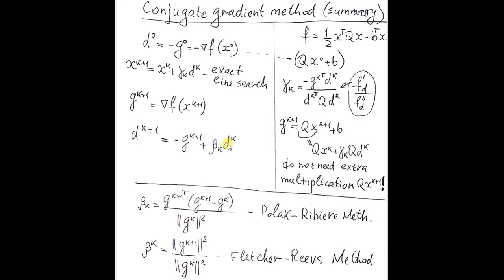Compute gradient at new obtained point and evaluate new direction dk plus 1 as a combination of the gradient and the previous direction, where beta k is calculated by Polak-Ribiere formula or by Fletcher-Reeves formula. Pay attention that despite that we developed the method for quadratic functions, it's written here in the form which can be applied for general smooth functions.